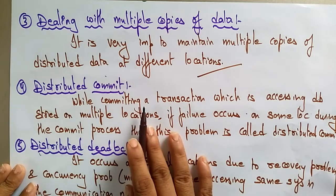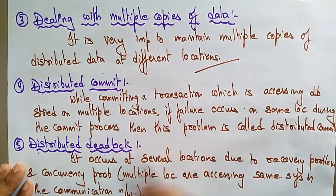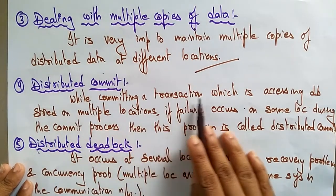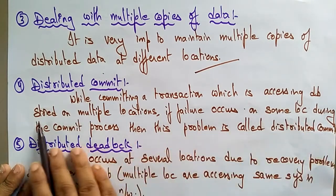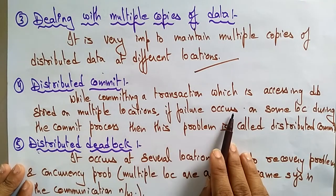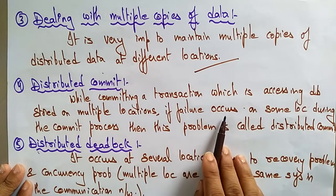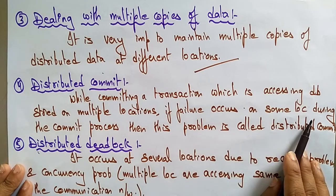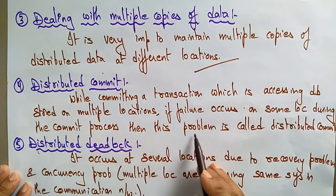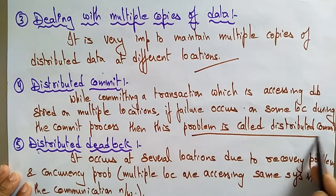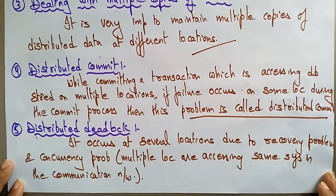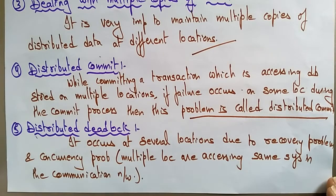Concurrency control can be managed by dealing with multiple copies. Another problem is the distributed commit — a commit message while committing a transaction which is accessing a database stored on multiple locations. If any failure occurs on some location during the commit process, we call it a distributed commit.